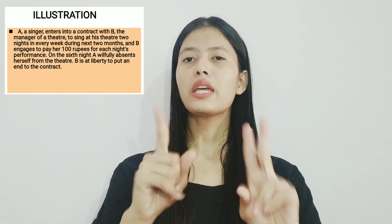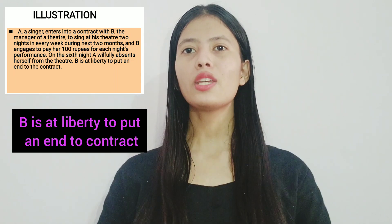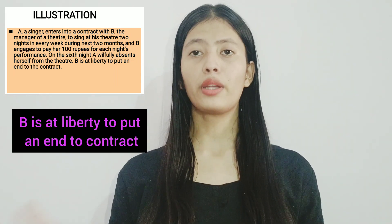A willfully absents himself on the sixth night — he does not come to sing. B had been paying A one hundred rupees every night for his performance over two months. Now on the sixth day A is willfully absent, so it depends on B. B has two options: either he can cancel the contract, or let A continue. Since A has not performed, B is at liberty to put an end to the contract, or he can also claim compensation.